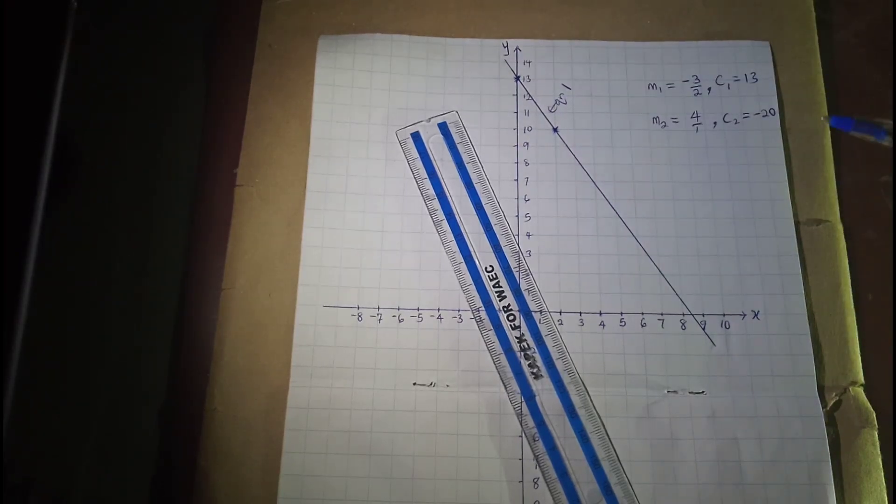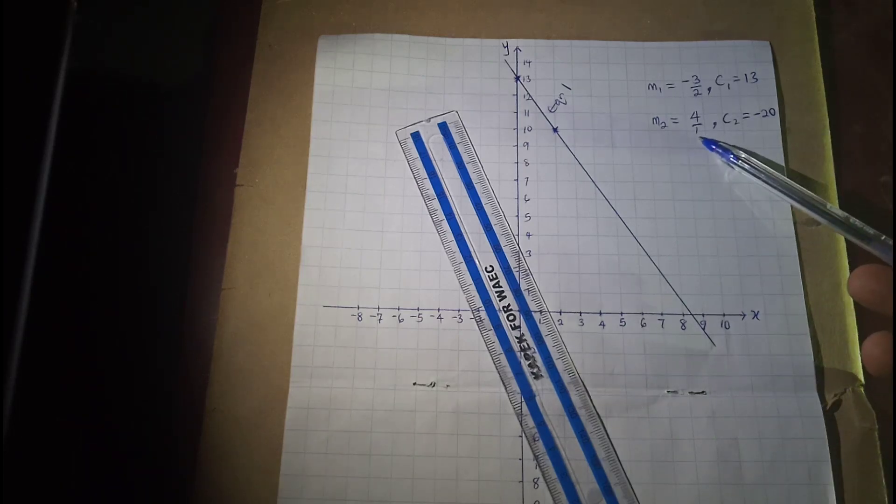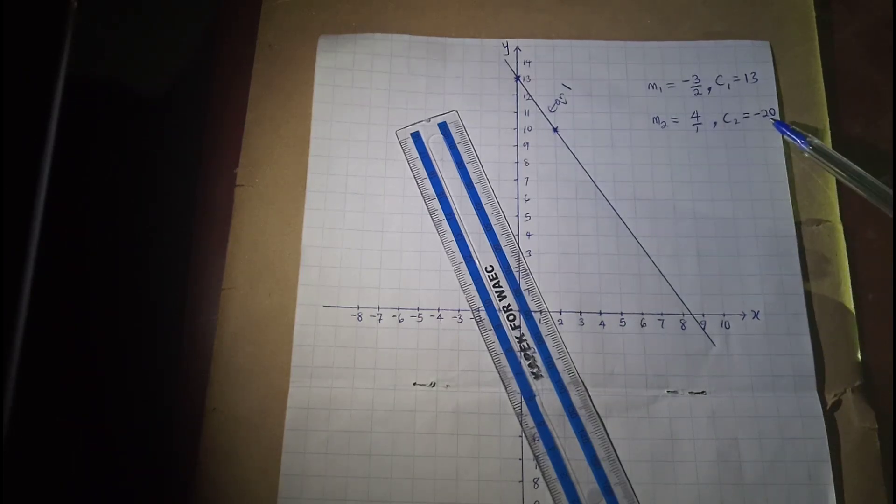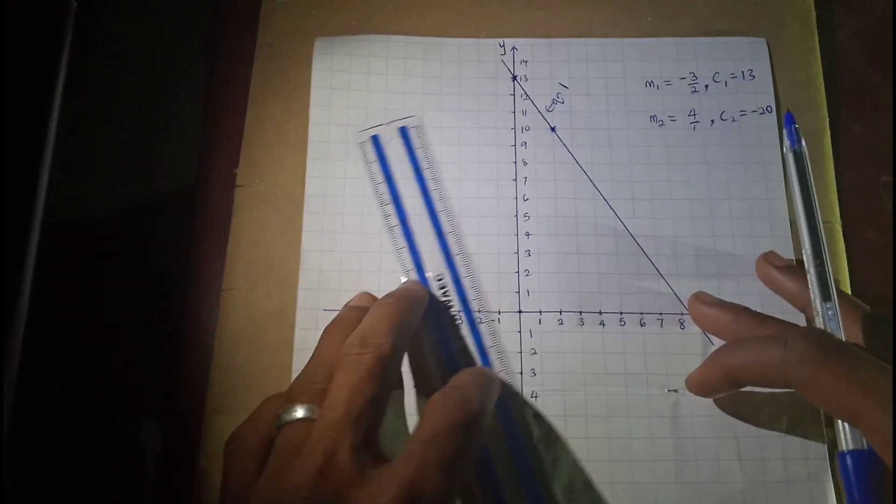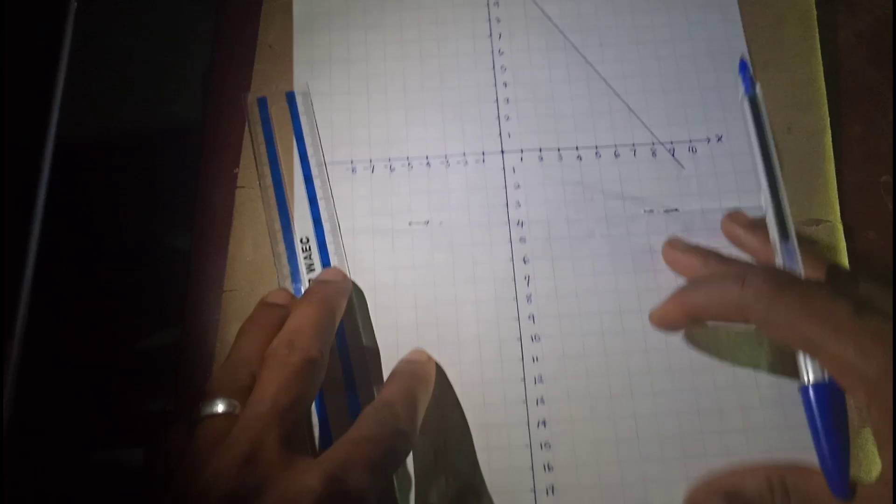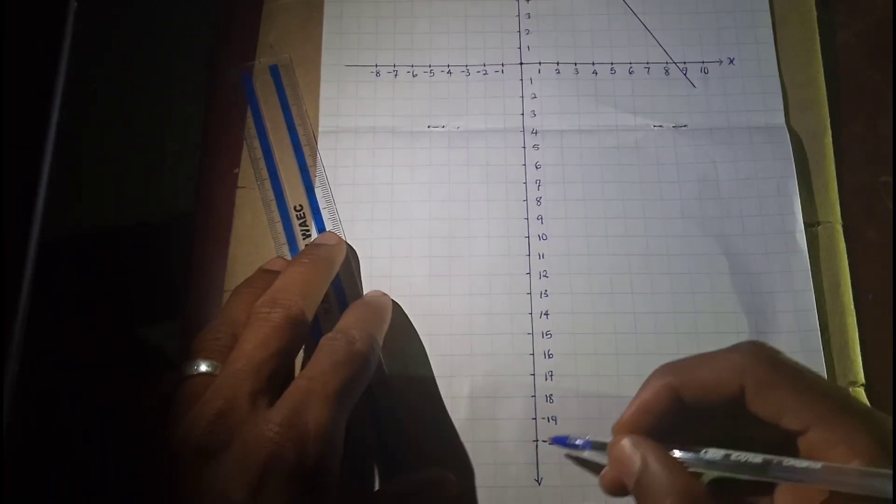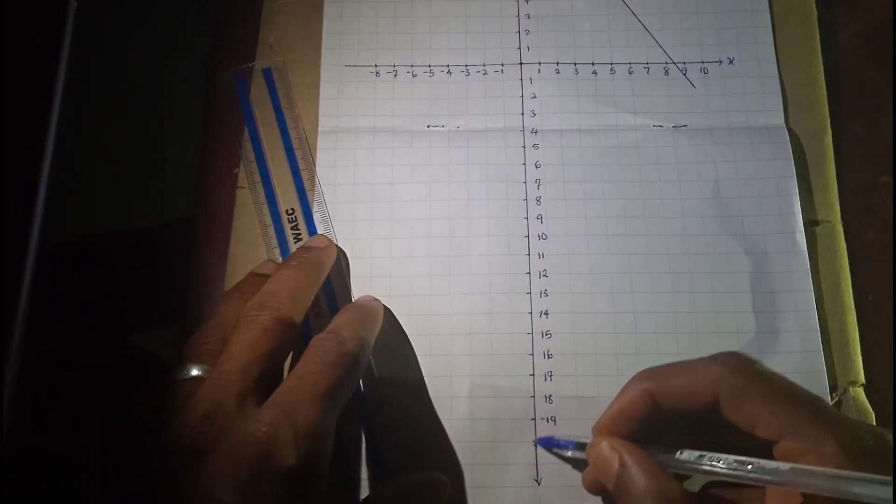Then we need to do the same to equation number 2. We have our slope and intercept. We need to plot the intercept, which is negative 20. From here downward, if you look at it, we have negative 20, which is this. Then we put our star there.